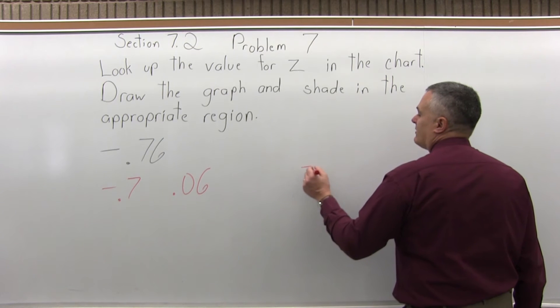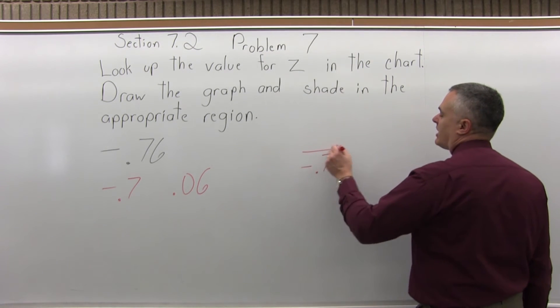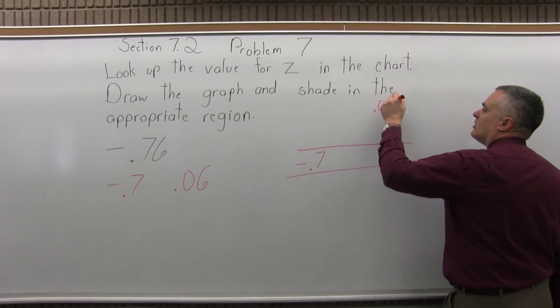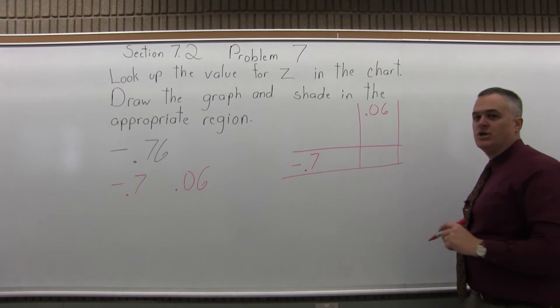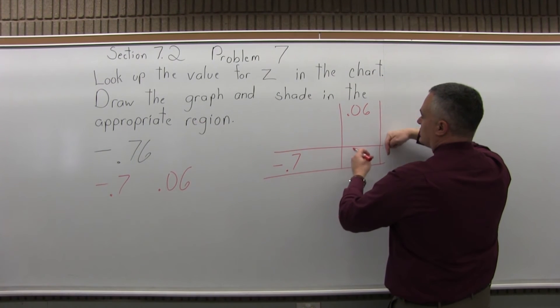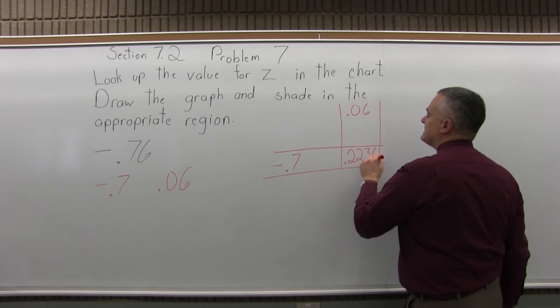So we'll go to the negative .7 row, which is getting near the bottom of the negative page of the chart. And you want to look and see where that will intersect with the .06 column. So if you follow the negative .7 row and the .06 column, they will intersect at .2236.